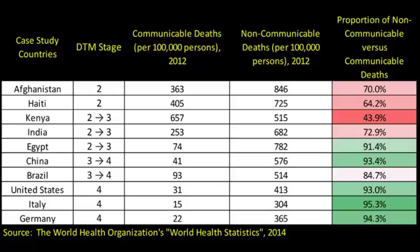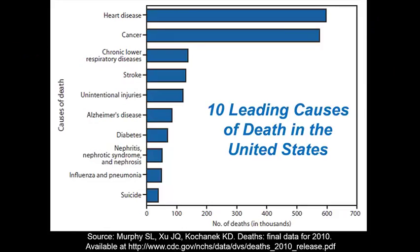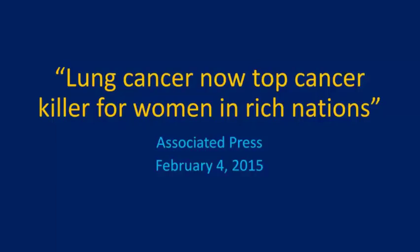A simple bar graph shows the 10 leading causes of death in the United States in 2010. From this list, the biggest causes are non-communicable diseases. Interestingly, in wealthier countries you do see decreasing rates of smoking — people are smoking less, especially among younger people in the United States, with 18 to 35 year olds showing much lower rates of cigarette smoking.